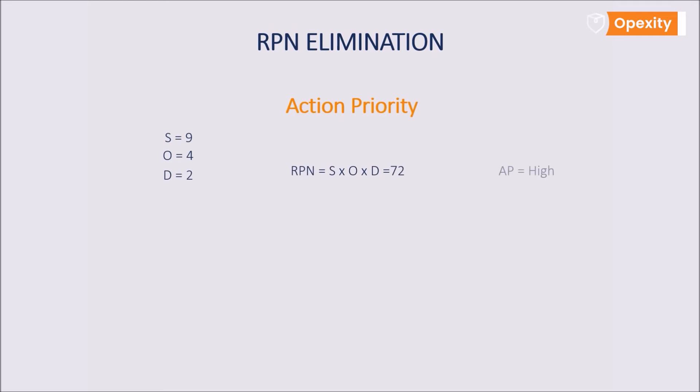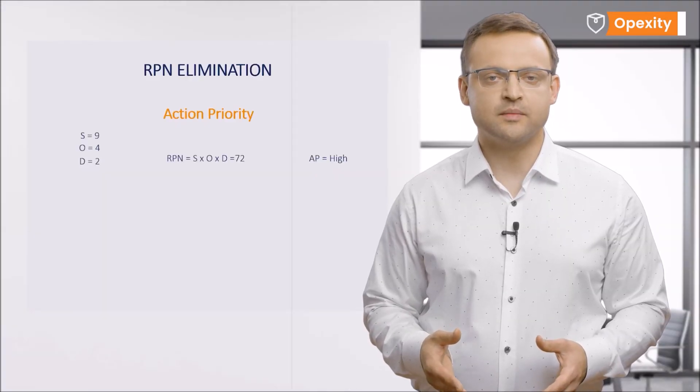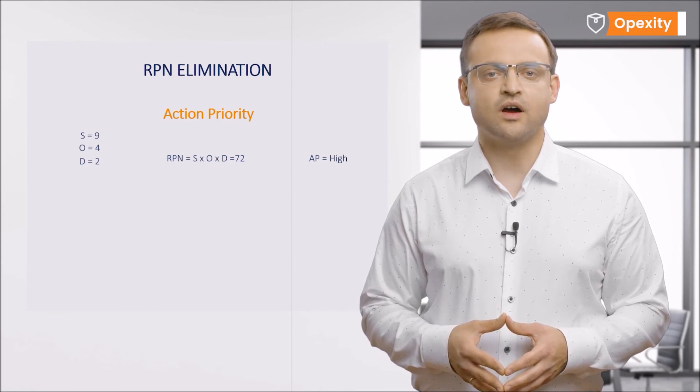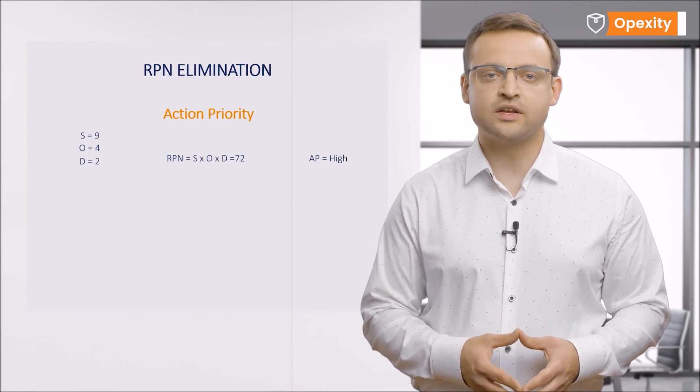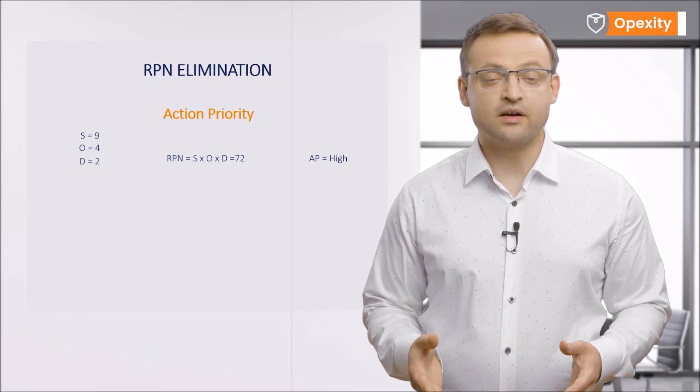Following the old approach, we would use the product method and determine the RPN rate. In our case it would be 72. What does this mean? In the case of organizations that decided to implement an action only on the basis of the RPN value, this result means that no action needs to be implemented. In the previous episodes of this course, it was said that using RPN values should not be the only criterion for evaluating performance. I would like you to bear it in mind.